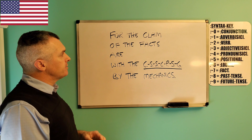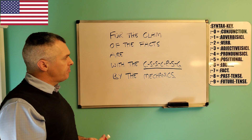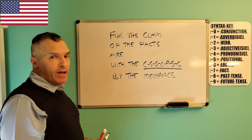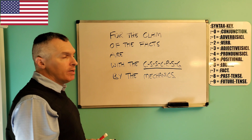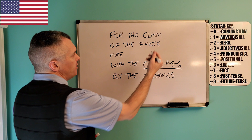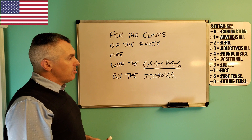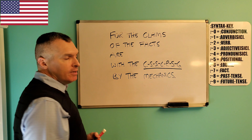Here's a sentence I just came up with on the spot: 'For the claim of the facts, are, with the correct sentence structure, communication, parsing, syntax, grammar, by the mechanics.' Is this correct? Because this is something I see a lot of people doing — they will look and if they see that this word is plural, they will make their verb plural. That is not correct. The thing that determines the plurality or singularity of the verb is the cause. So in order for this to be 'are,' this would have to be 'claims.' 'For the claims of the facts, are, with the correct sentence structure, communication, parsing, syntax, grammar, by the mechanics.' Backwards it still works the same.